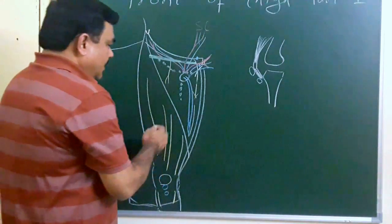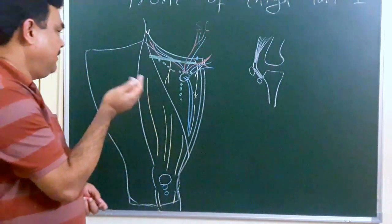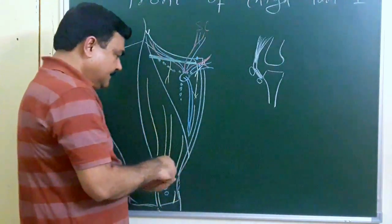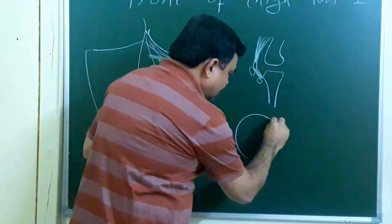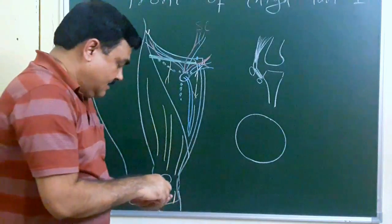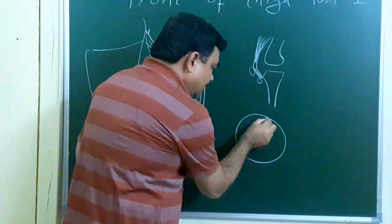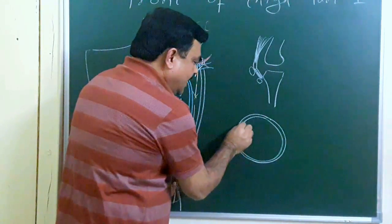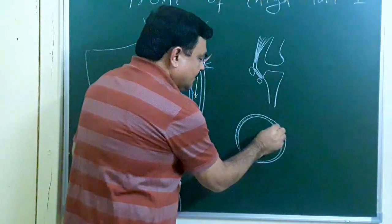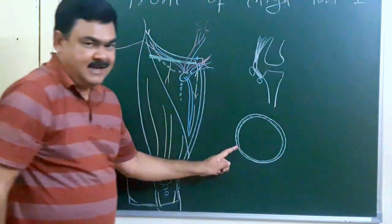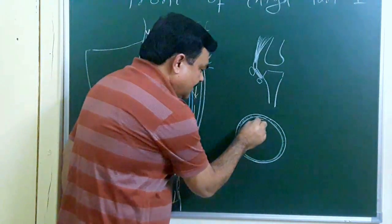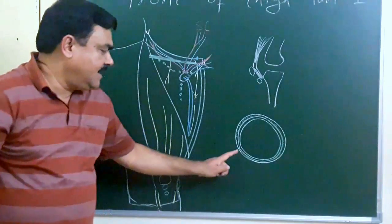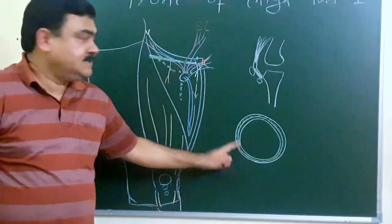After removing the superficial fascia — both the fatty and membranous layers — you will find the deep fascia. In a transverse section, you will see: skin, then superficial fascia with two layers (the outer fatty layer and the inner membranous layer), and deep to this is the deep fascia. The deep fascia is loosely attached to the membranous layer, except at Holden's line.